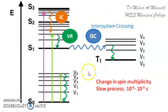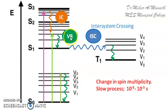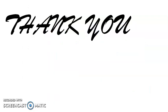These are the various non-radiative transitions: internal conversion, vibrational relaxation, and inter-system crossing. Hope this is clear. If you have any clarifications needed, please feel free to ask. Thank you for watching.